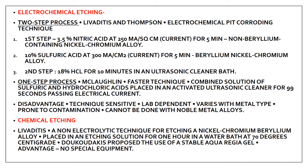The one-step process was introduced by McLaughlin. It is a faster technique combining both sulfuric and hydrochloric acid into a single solution, eliminating the need to transfer the retainer between solutions. Disadvantages of electrochemical etching include: it is technique sensitive, lab dependent, varies with metal type, prone to contamination, and cannot be done with noble metal alloys.